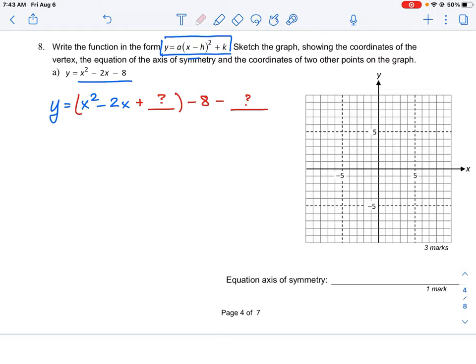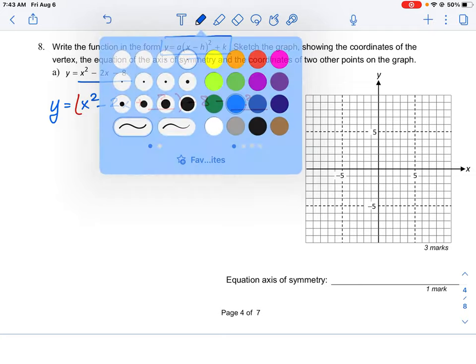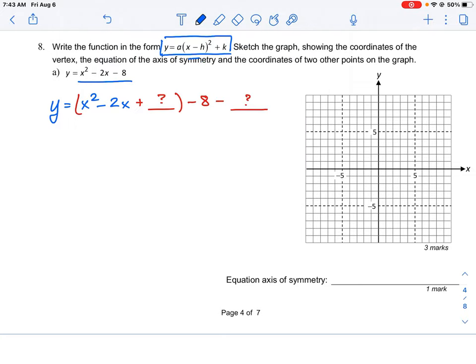So then what we can go through now is go through our rules that we did in the previous question. We're going to look, the first thing we're going to do is we're going to take a look at our middle term. Our middle term here is minus 2. So what we do is we take half of that, so we're going to go minus 2 divided by 2. That's going to give us a negative 1. And then our second step is going to be taking negative 1 and we're going to square it, which is going to give us plus 1.